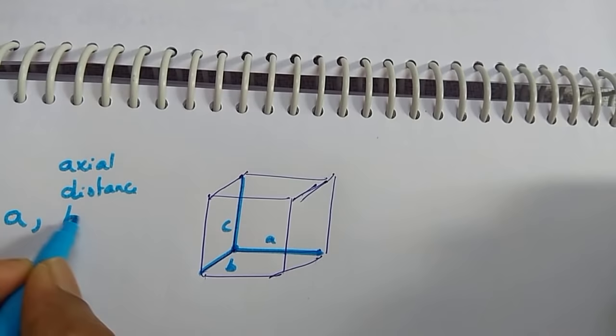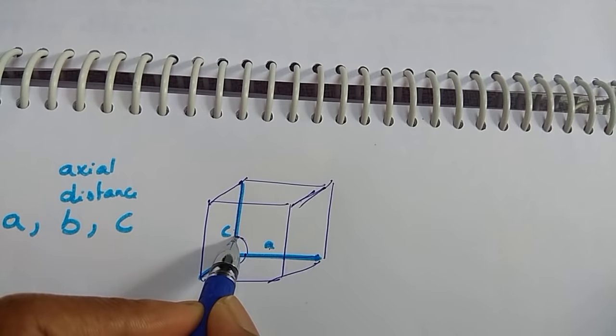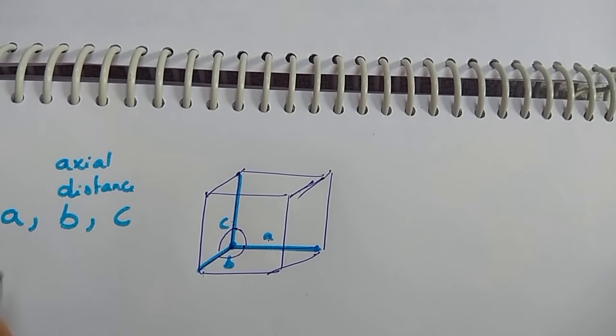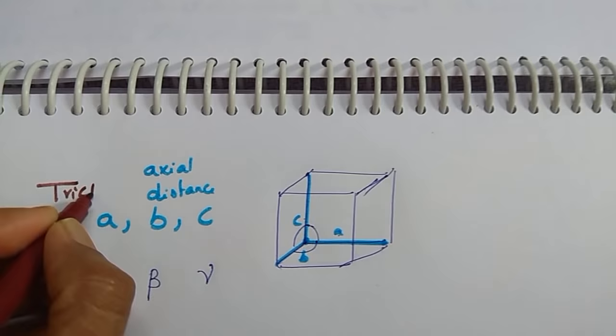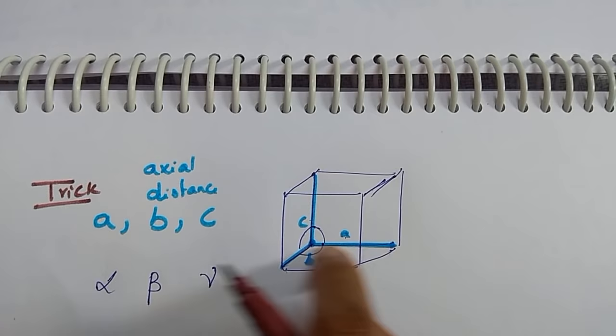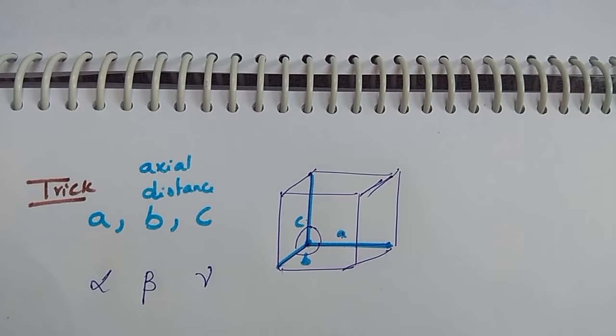The three axial distances are A, B, and C, and the angles between them are named alpha, beta, and gamma. Note that different books may represent the axes in different orders, so it is very important to know how to assign the angles correctly.